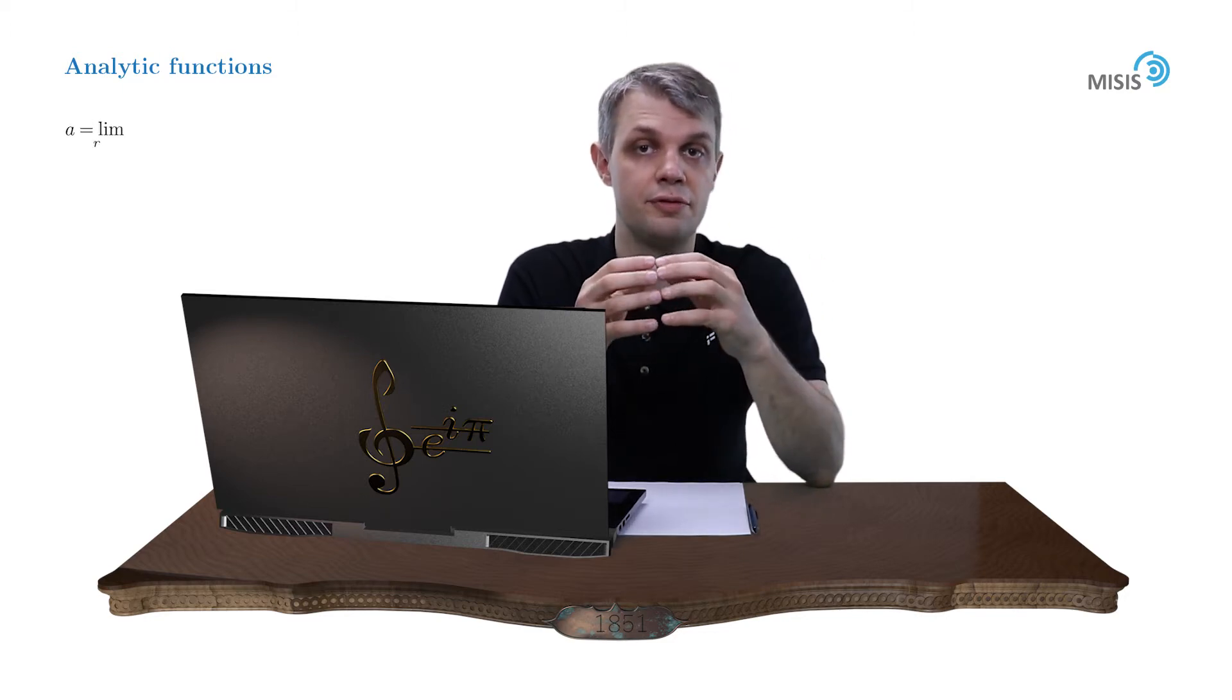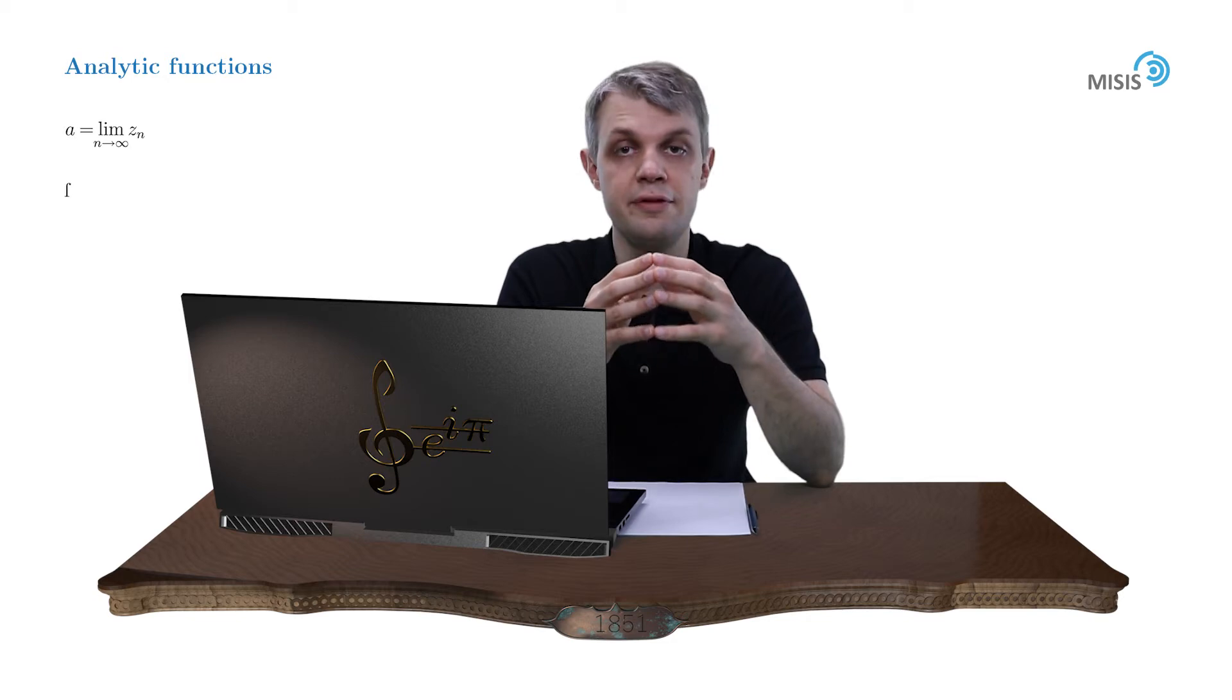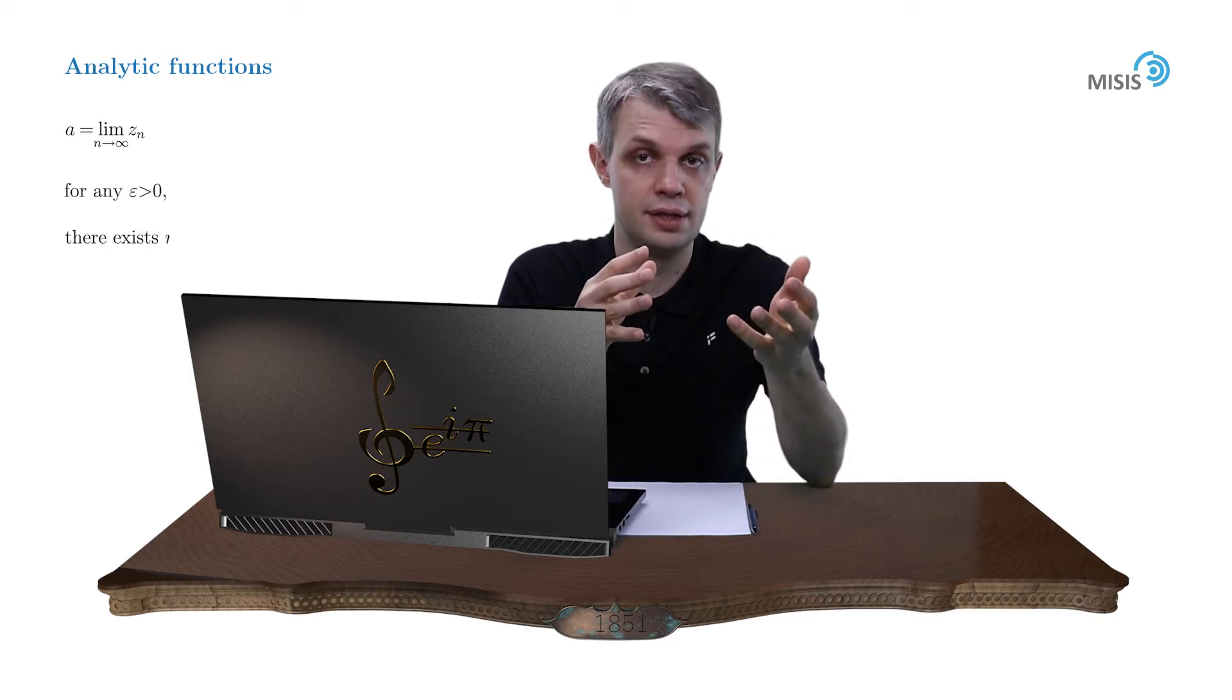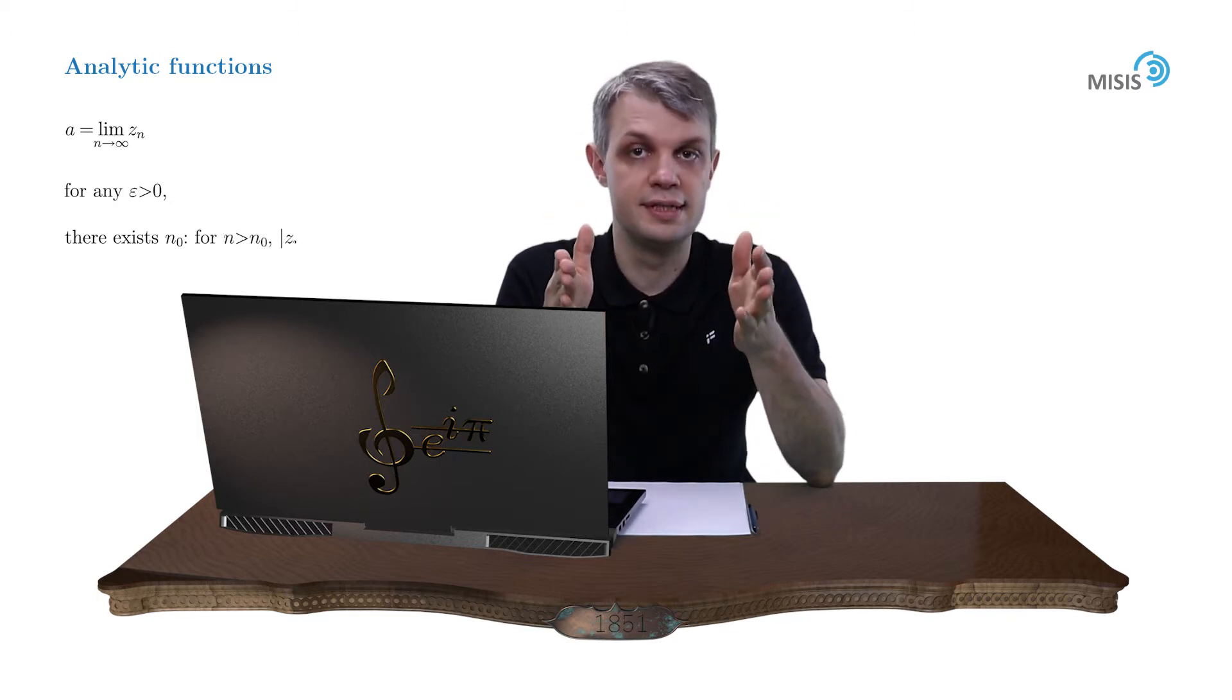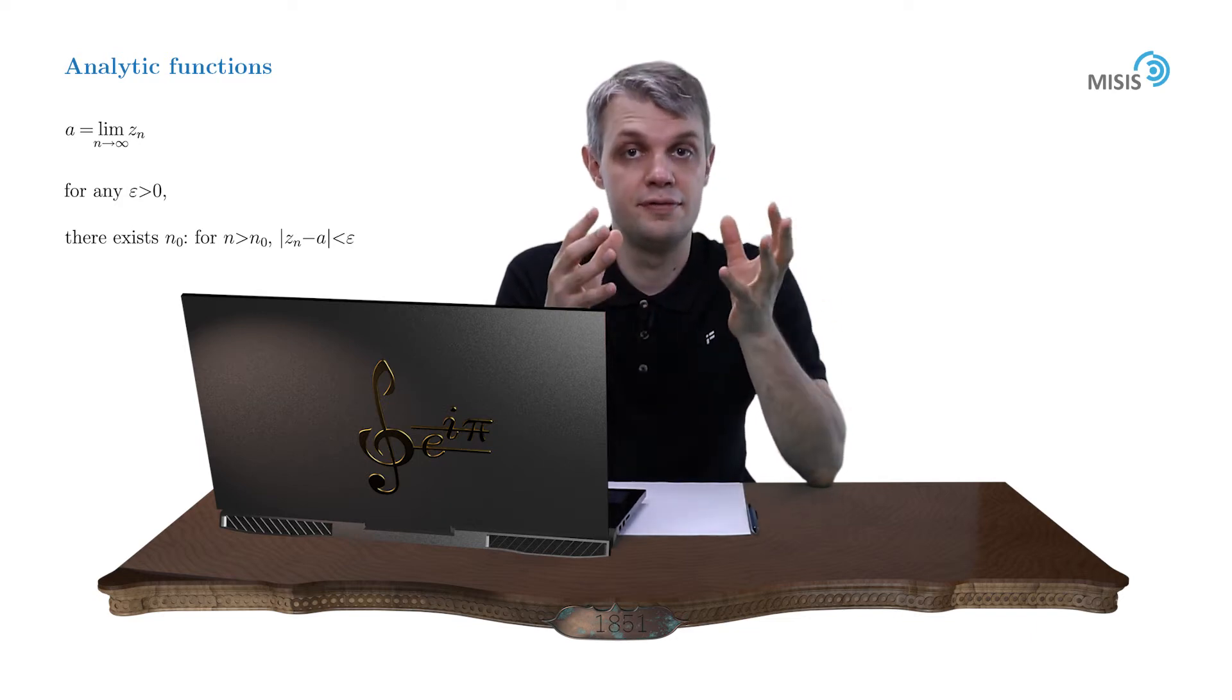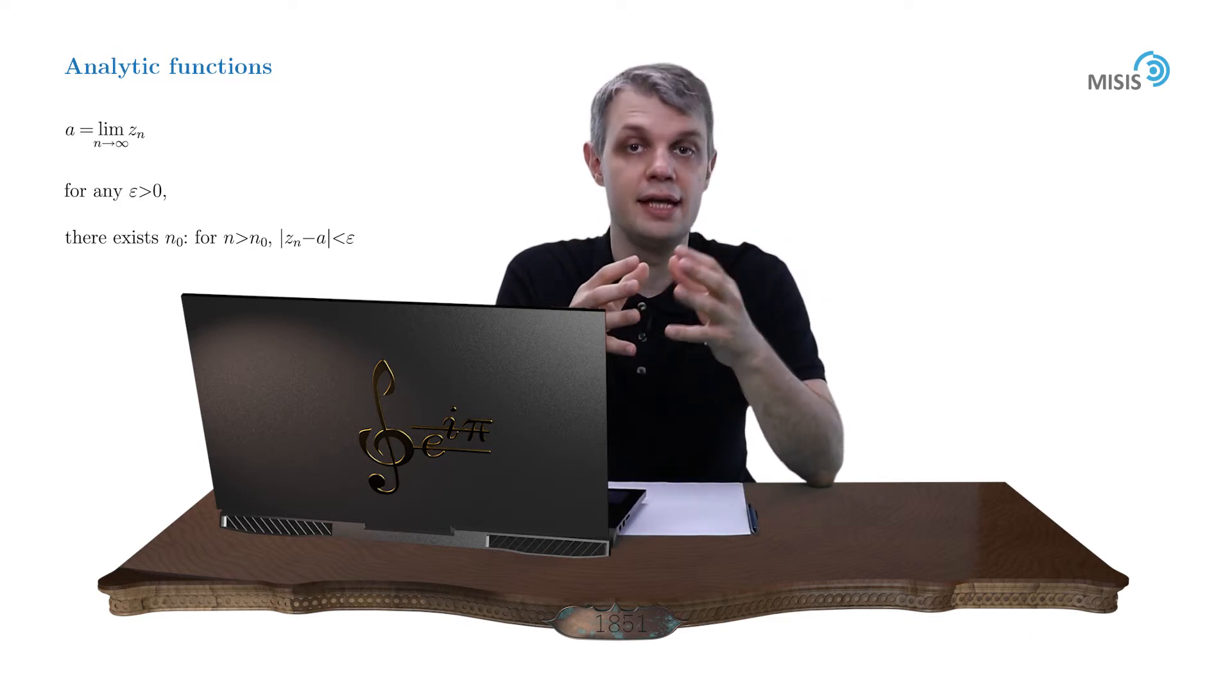Point A is called the limit of a complex sequence zn if for any positive epsilon there exists some natural number n0 such that for any n greater than n0, the modulus of the difference zn and a is smaller than epsilon. In a similar manner, the definition of the limit of the function is defined and so on.